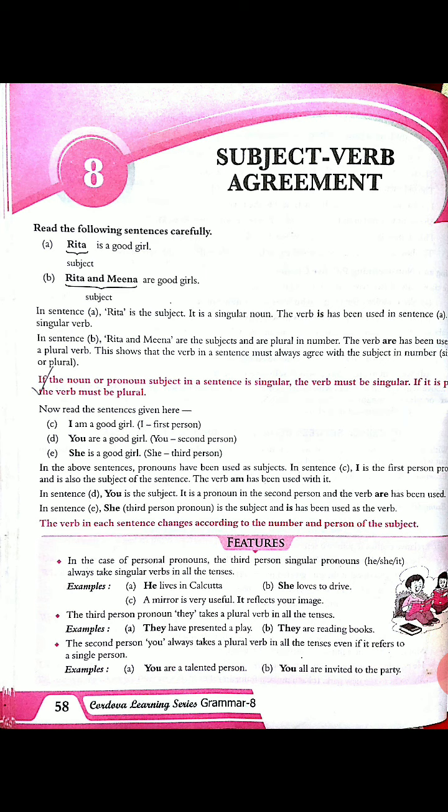I will tell you what is wrong with these two sentences. In the first sentence I said 'she were eating apples.' Here the pronoun 'she' is the subject and the verb I have used is 'were.' This is wrong because 'she' is a singular subject. We are talking about one girl, and with that I have used the verb 'were,' which is wrong. So instead of 'were,' I should use 'was.' The correct sentence will be 'she was eating an apple.'